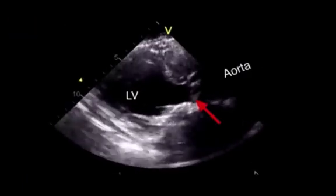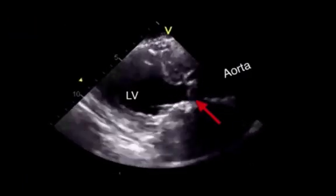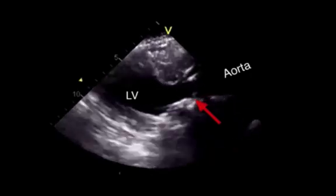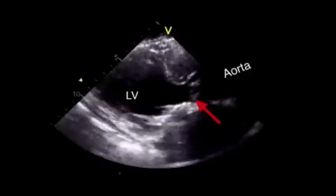So here you actually see the LV, or left ventricle, contracting into the aorta, and the red arrow is looking at the aortic valve, which is actually not opening very much if you can see that, and so this is aortic stenosis.